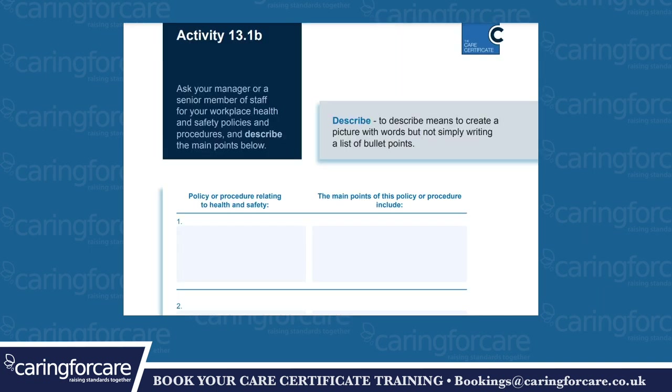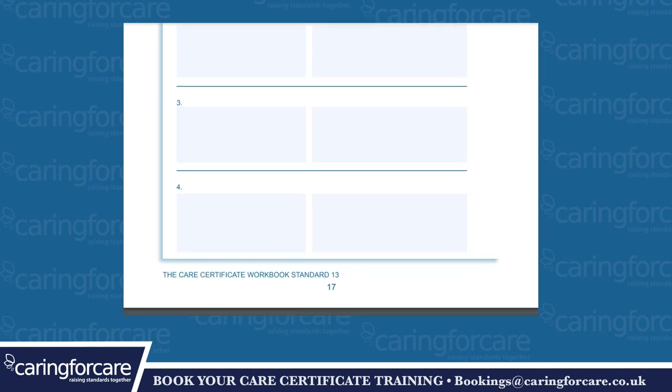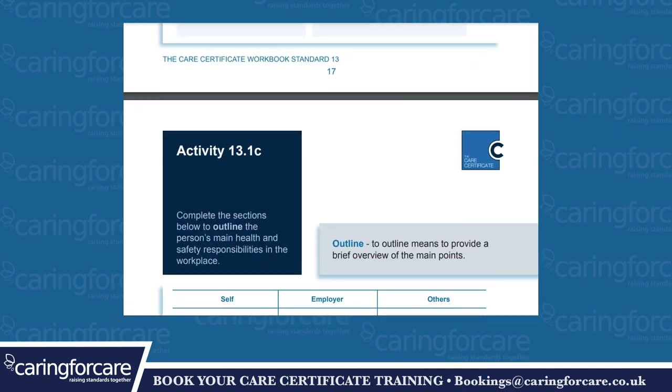Activity 13.1b: ask your manager or a senior member of staff for your workplace health and safety policies and procedures and describe the main points below. To describe means to create a picture with words but not simply writing a list of bullet points. Policy or procedure relating to health and safety — the main points of this policy or procedure include. There are four boxes for examples.